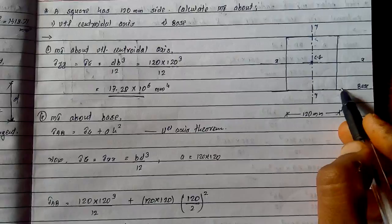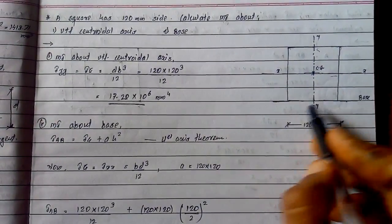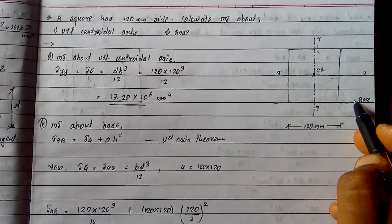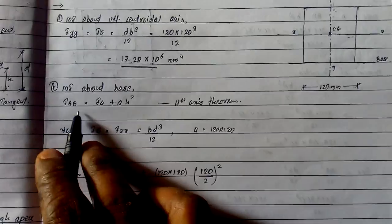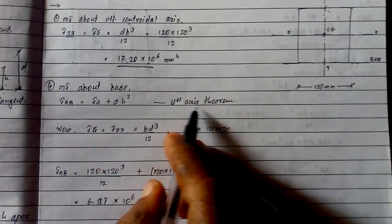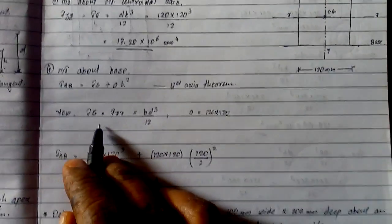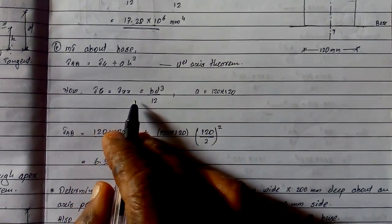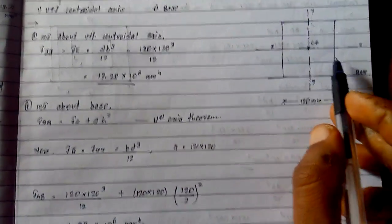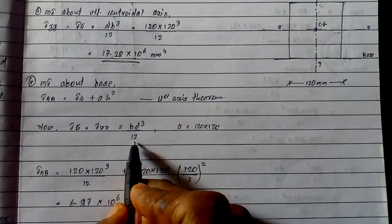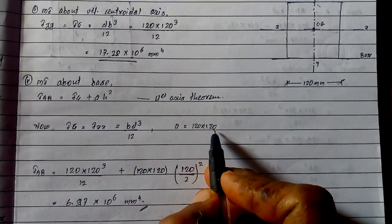To calculate moment of inertia about base, we consider parallel axis theorem. The formula is I_ab = I_g + Ah². I_g is I_xx, which is bd³/12. Area is b times d.